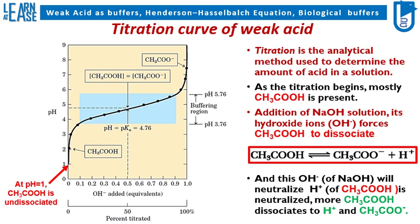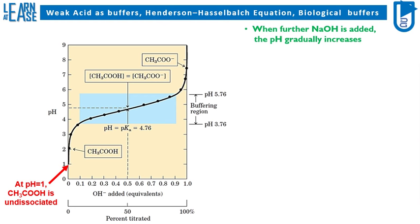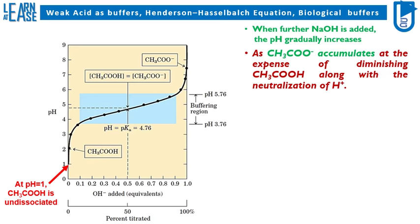The OH- ions of NaOH will neutralize the H+ ions of CH3COOH, so more CH3COOH will dissociate to give H+ ions and CH3COO- ions. When further NaOH is added, the pH gradually increases as CH3COO- accumulates at the expense of diminishing CH3COOH, along with the neutralization of H+ ions.